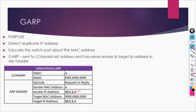Your sender IP and target IP are the same. Why? Let's take an example: your PC is getting an IP from a DHCP server. After receiving the IP from the DHCP server, you want to verify whether this IP belongs to you only, or whether someone else is also using this IP.